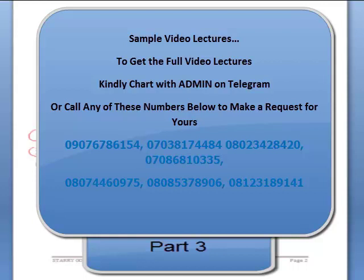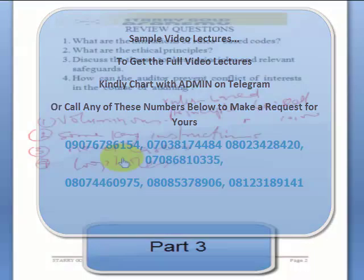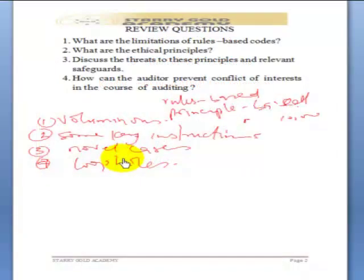People can easily find loopholes with rules-based codes. So those are some of the limitations and challenges that rule-based systems can have.